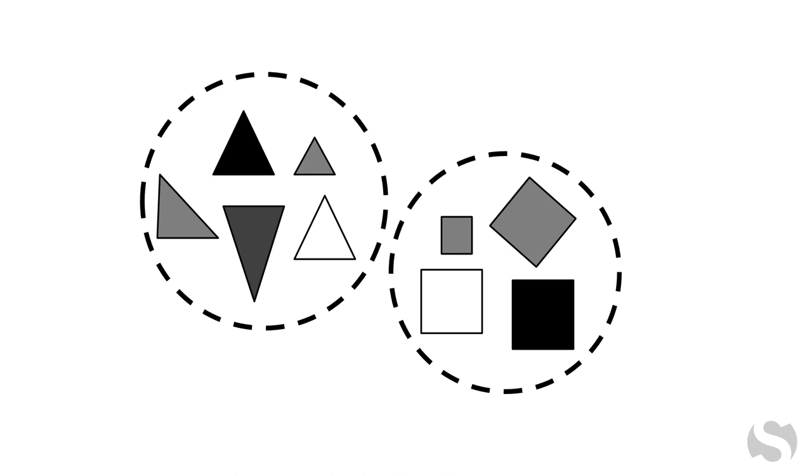For example, the concept of triangle is defined by critical features such as having three straight sides. Knowing such critical features allows students to quickly determine whether a particular shape is a triangle or not, and perhaps belongs to another category or concept.